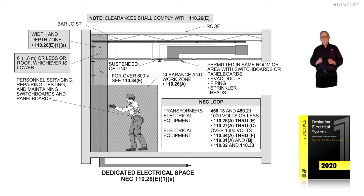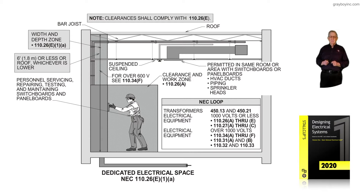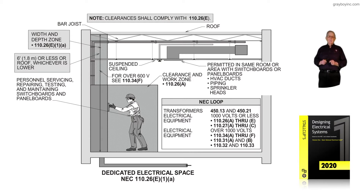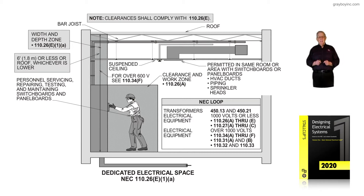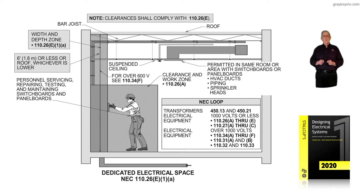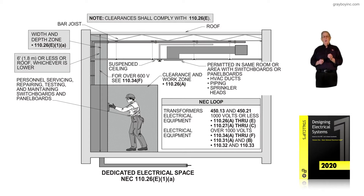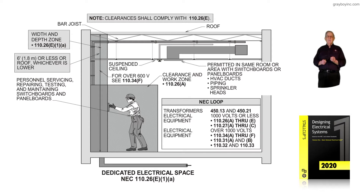This illustration is talking about dedicated electrical space in accordance with the NEC, 110.26, E as in Ed 1, little A. Notice in the illustration, it's kind of busy, but it lists important requirements that we would need to look at. The note says clearances shall comply with 110.26E.